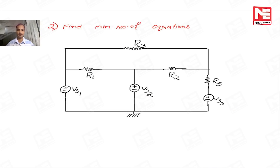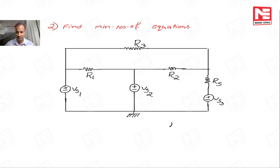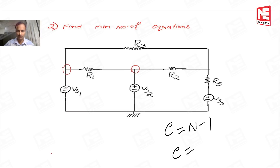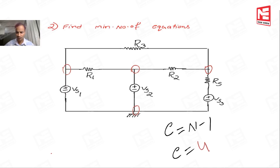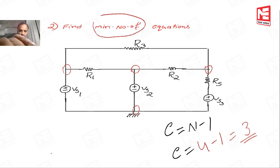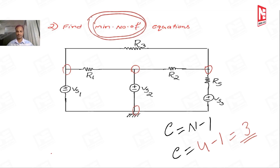Come to one more example. In this example, our requirement is to find the minimum number of equations to get the node voltage. The total number of equations formula is n minus 1. Let us see how many nodes are there — node 1, node 2, node 3, and node 4. So 4 minus 1 equals 3 equations. But the given example is asking for the minimum number of equations. We have to focus on this word very carefully.